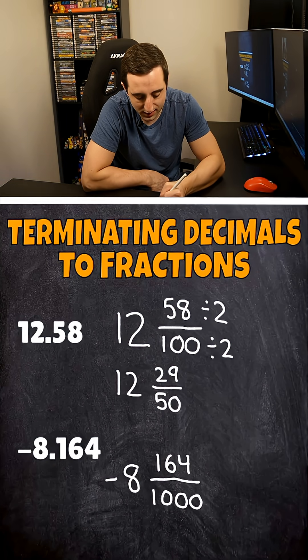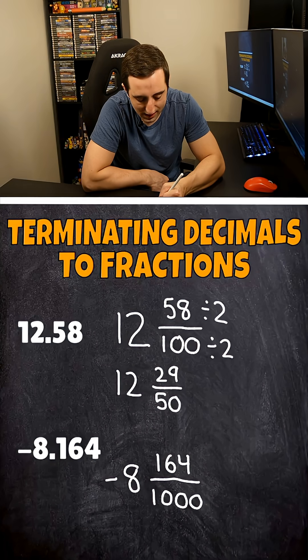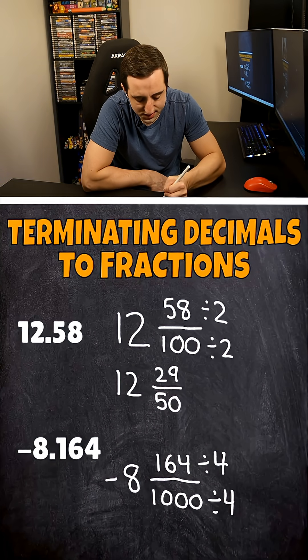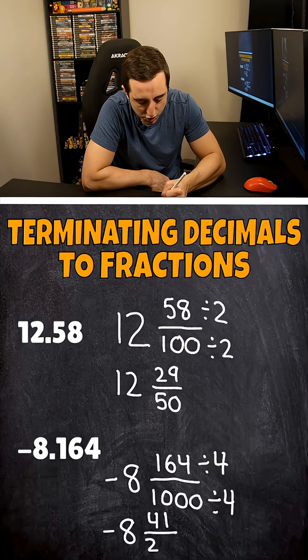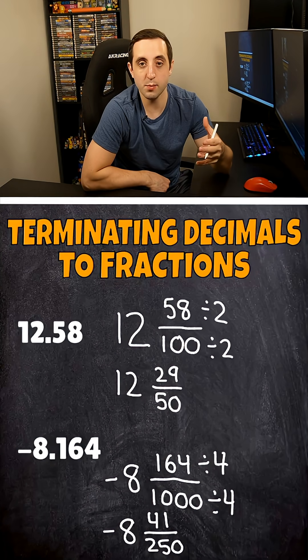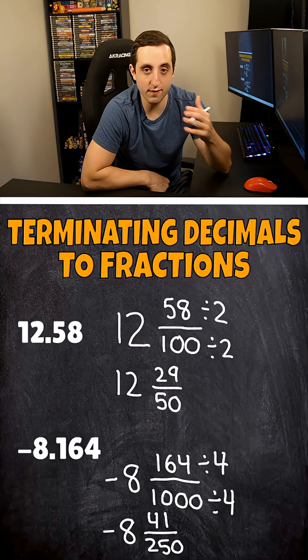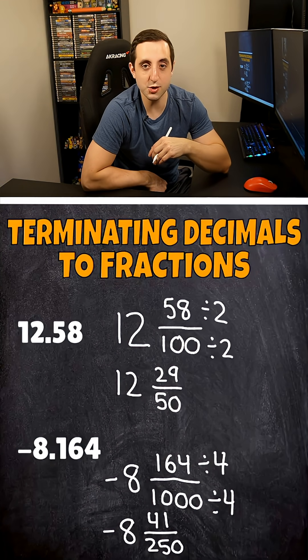And once again, we can simplify it a little bit. 164 and 1,000 are both divisible by four. So 164 divided by four is going to end up giving us 41 in our numerator over 250 for our final answer in simplified form. Hope the video helps you guys out in converting terminating decimals into fractions.